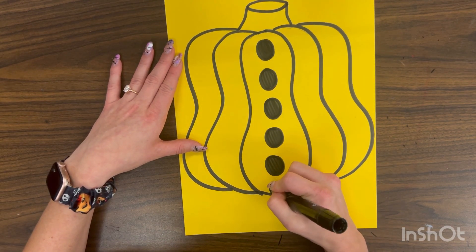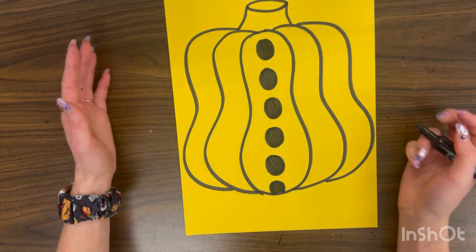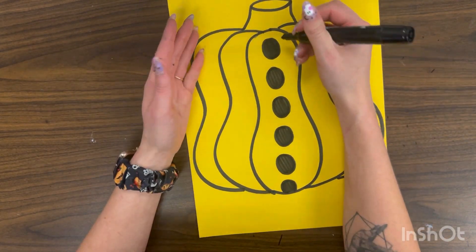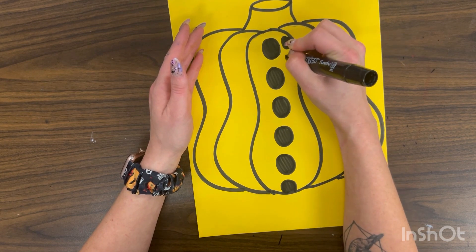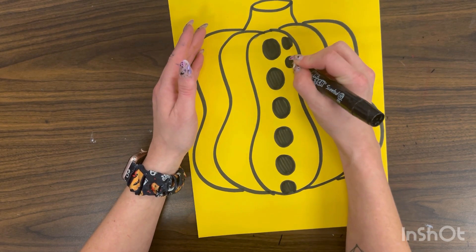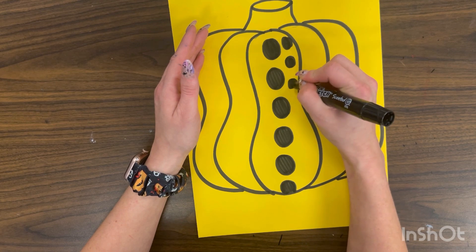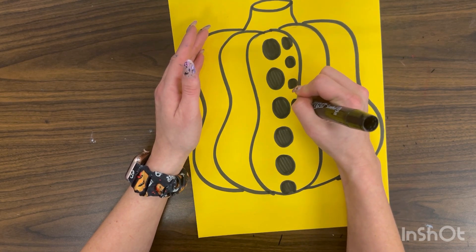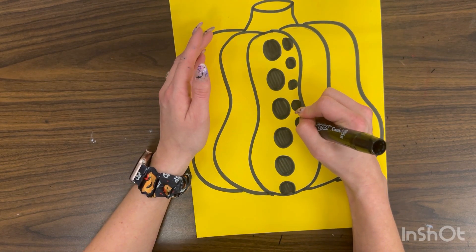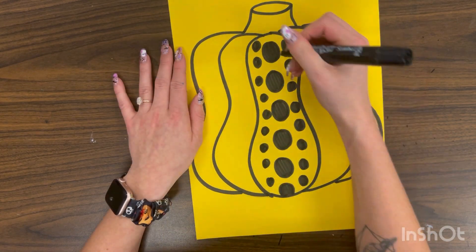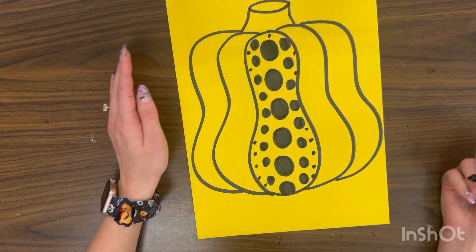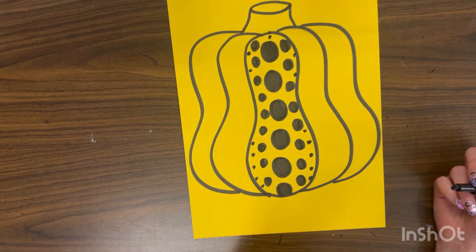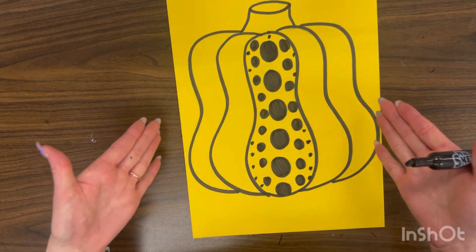But she doesn't just do one section of dots. Her dots repeat, and sometimes they start to get smaller. So I'll do a smaller section of dots. Draw the circle first and then fill it in. I'm going to do that on both sides, and then I'm going to make some even smaller ones. All right, so now my center is filled, and I'm going to keep doing that.